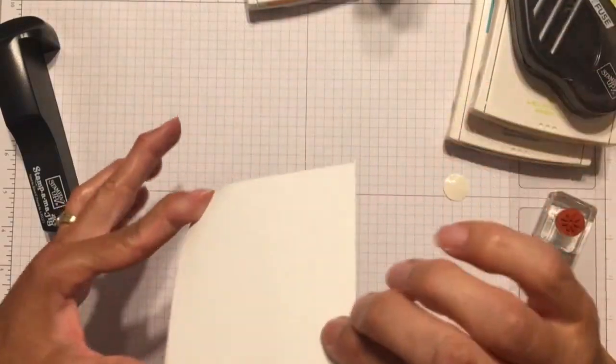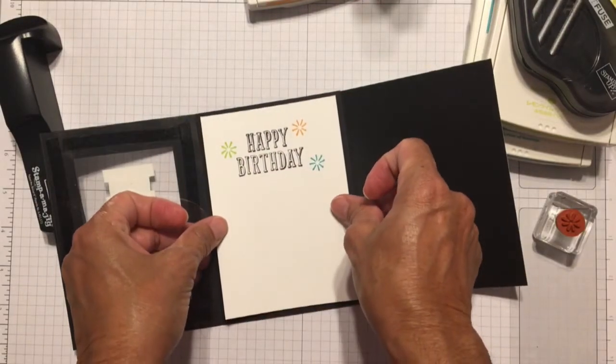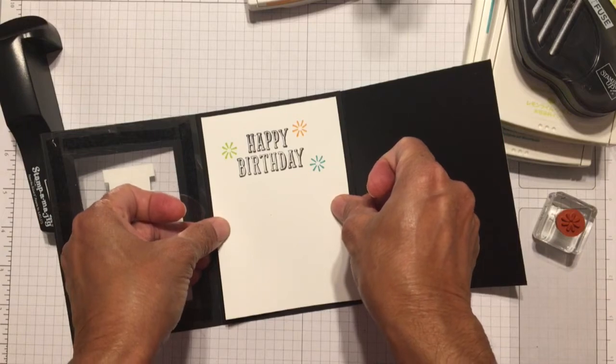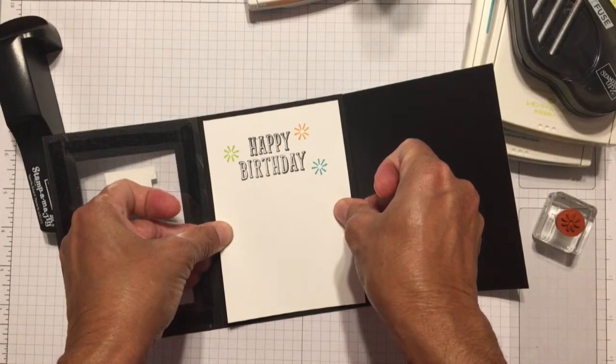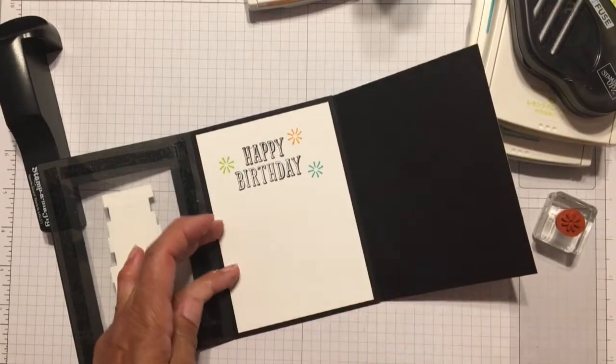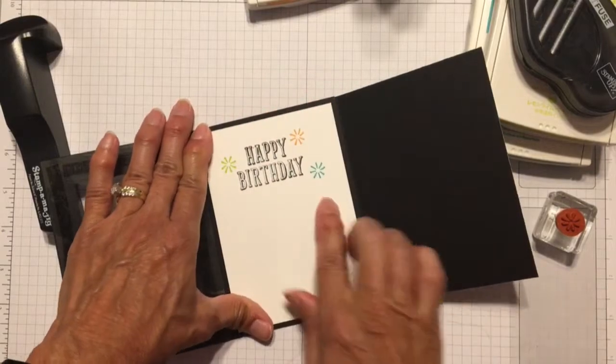You could use Snail Adhesive to attach this white panel to the inside of the card, but I'm using Fast Fuse. I just love knowing that nothing is going to come undone. This stuff is really strong. So I'm just lining up my panel with the inside of the card and pressing it in. And that completes my card.